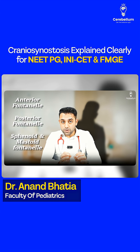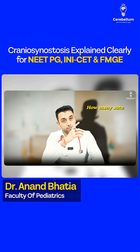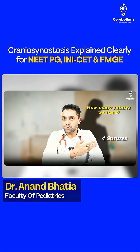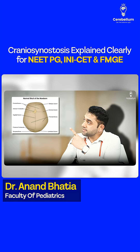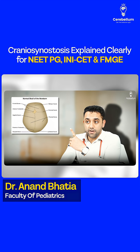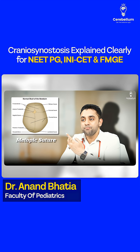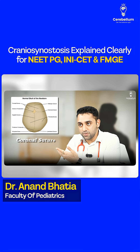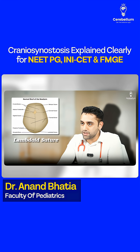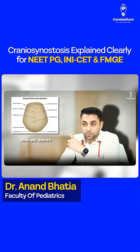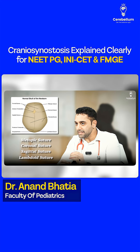In total, we have six fontanelles. Most importantly, we have four sutures. The four sutures are: in the front we have the metopic suture, then the coronal suture, then the sagittal suture, and the lambdoid suture.